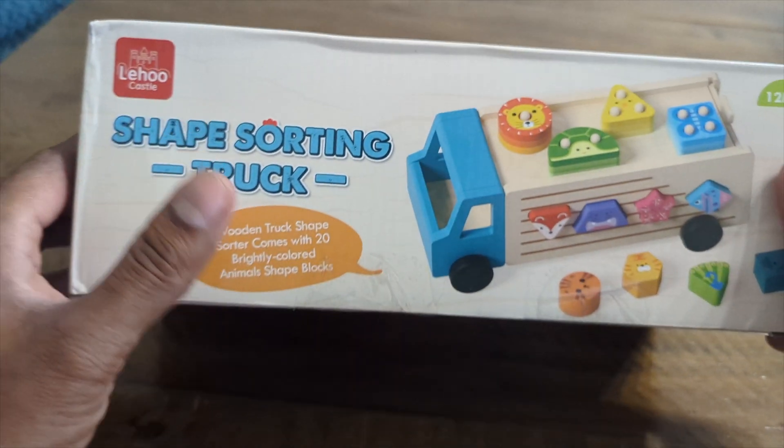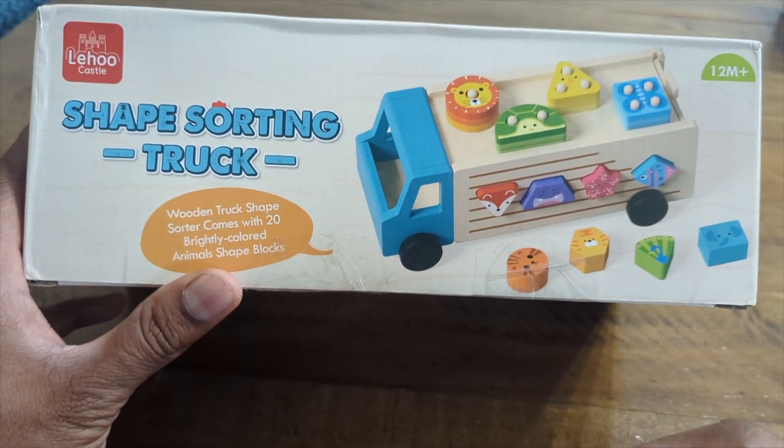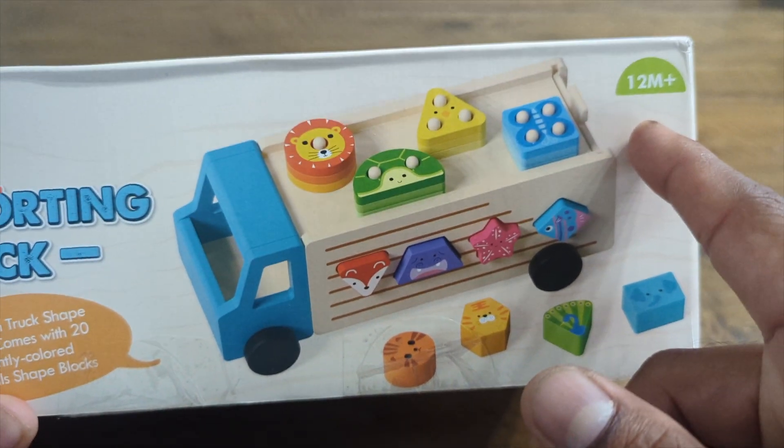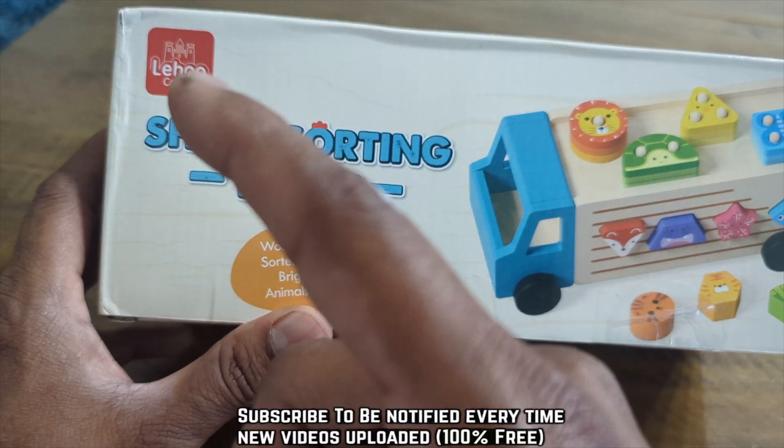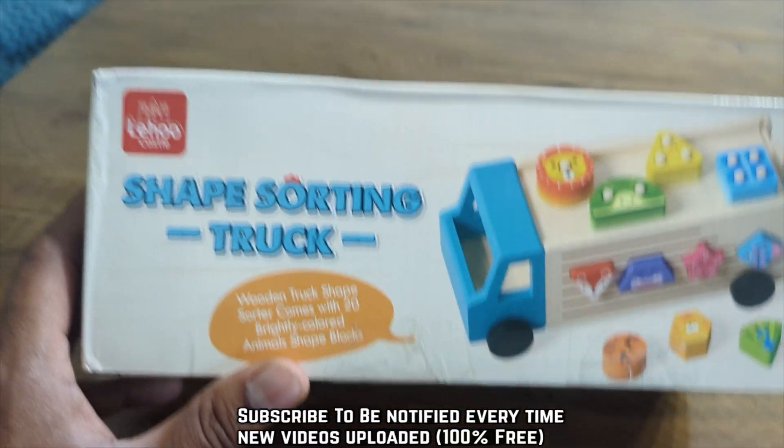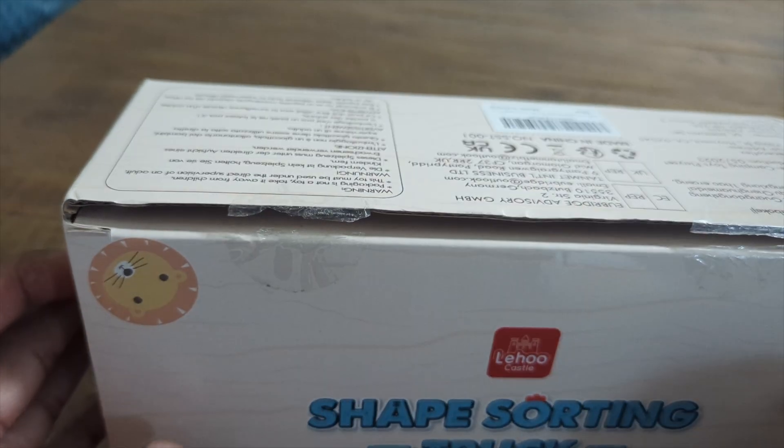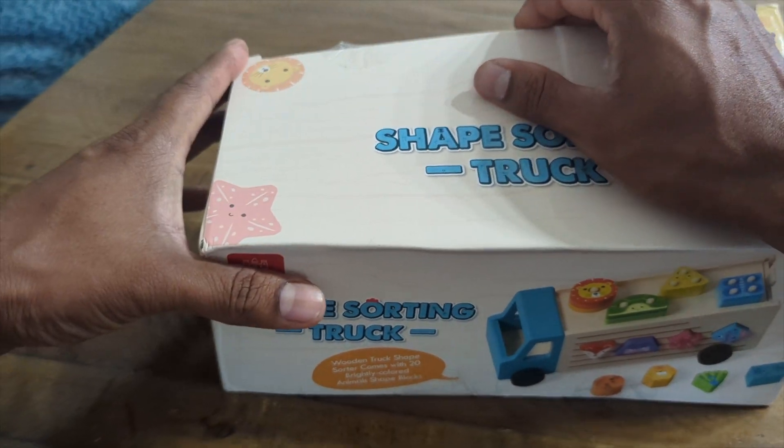Welcome back to Product Zone, today we're gonna unbox one of the most popular, best-selling, over 12 million plus sold on Amazon. This is the Shape Sorting Truck, really great for toddlers. I'm gonna unbox this real quick and show you.